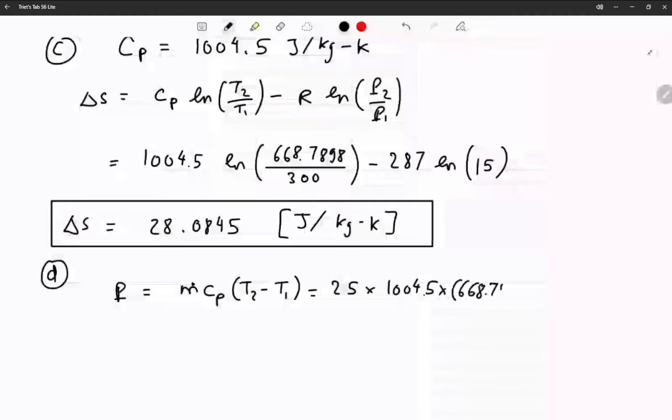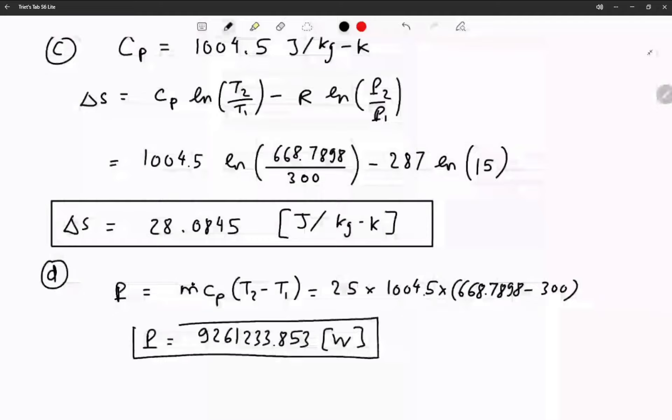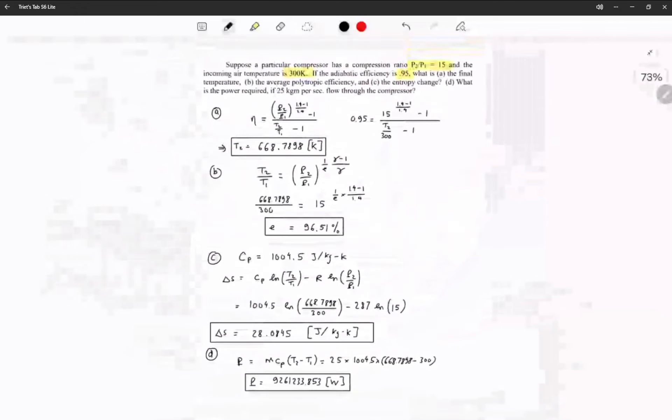668.7898 minus 300, you get 9261233.853 watts. And that's gonna be the final solution for this problem. Here we go.